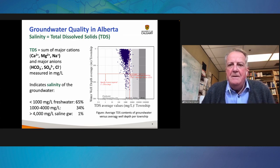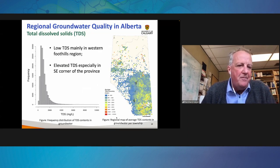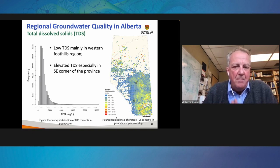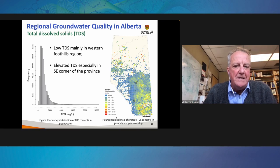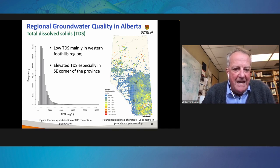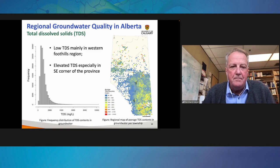In Alberta, groundwater samples for water quality assessment have been collected by various government organizations for many decades. Over the last 10 years, we amalgamated groundwater quality information from five major sources, conducting rigorous QA/QC analysis resulting in 131,000 groundwater samples with quality information distributed across Alberta. We found that about two-thirds of groundwater in Alberta has less than 1,000 milligrams per liter TDS; one-third has TDS ranging from 1,000 to 4,000 milligrams per liter; and only one percent of shallow groundwater has more than 4,000 milligrams per liter — classified as saline groundwater. Low TDS occurs mainly in the western foothills and west of Highway 2, while elevated salinities occur predominantly in the southeastern portion of the province.